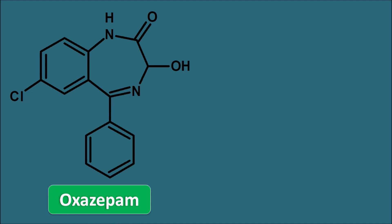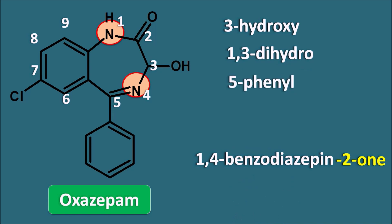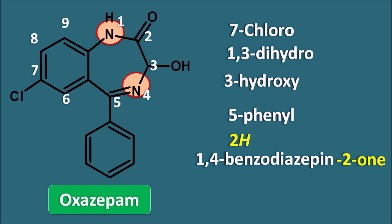Now let us look at oxazepam. One change in oxazepam is that it has a hydroxy group at the third position. The root name is again 1,4-benzodiazepine-2-one. The groups are: 3-hydroxy, 1,3-dihydro, 5-phenyl, 7-chloro, and 2H as the indicated hydrogen. Arranged alphabetically (chloro, dihydro, hydroxy, phenyl), the IUPAC name of oxazepam is: 7-chloro-1,3-dihydro-3-hydroxy-5-phenyl-2H-1,4-benzodiazepine-2-one.